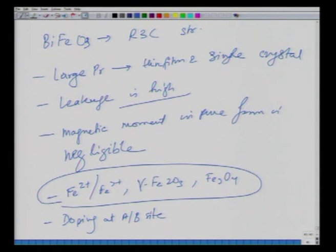A-site substituents like barium, neodymium, or lanthanum, or B-site substitutes like zirconium or titanium have been reported to result in improved or changed electrical and magnetic properties. BiFeO₃ is one of the most well-studied structures, and its high Tc and Néel temperature make it very attractive for research.